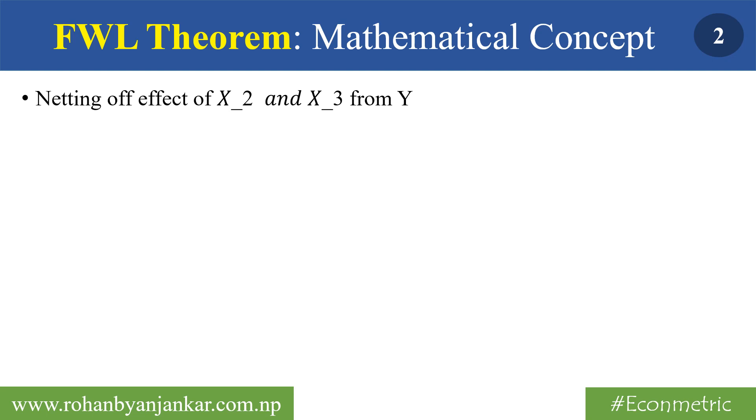It means that if we net off the effect of X2 and X3 from Y, we will have a new regression equation that is Y equals to a plus beta 2 X2 plus beta 3 X3 plus V1. V1 is a new error term, and we have removed beta 1 X1 from this equation because our aim is to net off the effect of X2 and X3 from Y.